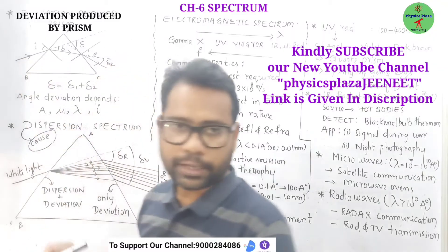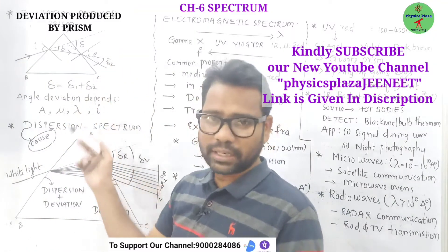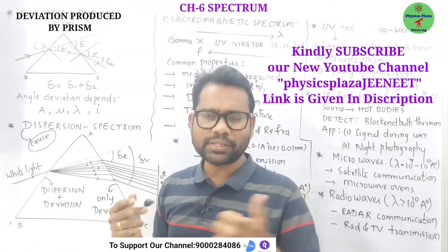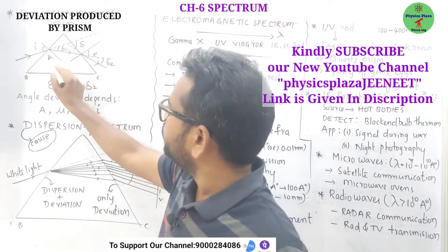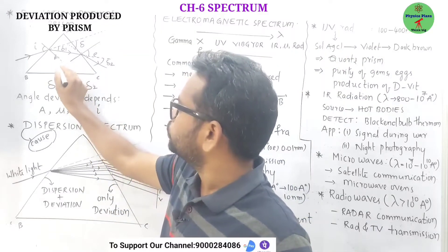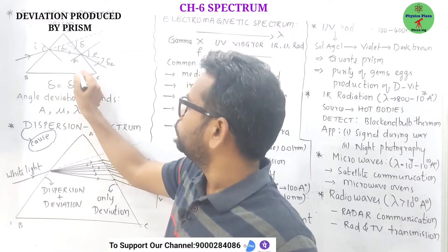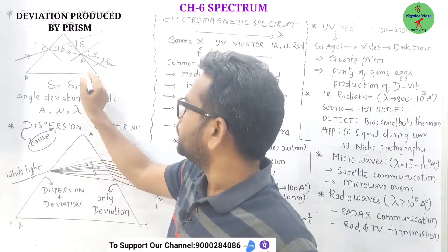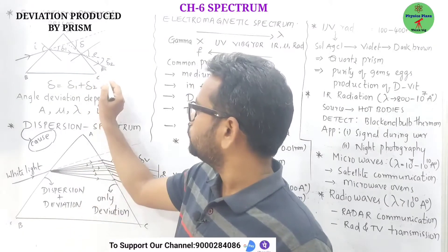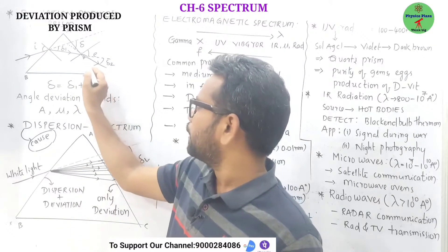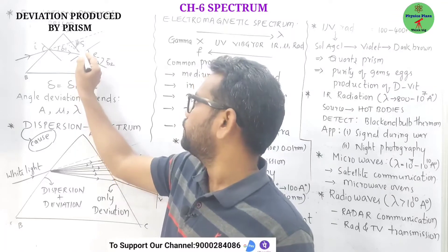This is what monochromatic light means. What will happen — we already studied in our plane surfaces, so let us recall here. Due to refraction, light is bending towards the normal. Again, due to refraction from glass to air, it is going away from the normal. If you produce this emergent ray backward, you can notice this angle of deviation.